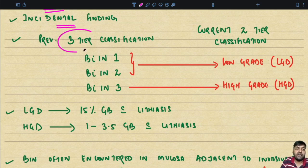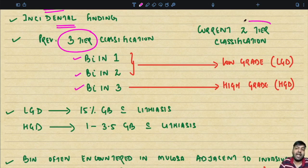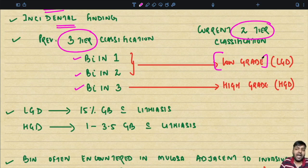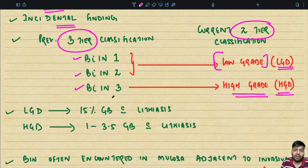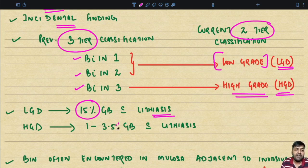Previously there was a three-tier classification — BIN 1, 2 and 3 — but in the current fifth edition of the WHO we have a two-tier classification. BIN 1 and 2 is regarded as low-grade BIN, and BIN 3 is regarded as high-grade BIN. Low-grade BIN has low-grade dysplasia and high-grade BIN has high-grade dysplasia. Low-grade dysplasia is seen in 15% of gallbladders with cholelithiasis, whereas high-grade dysplasia is seen in only 1 to 3.5% of gallbladders with cholelithiasis.